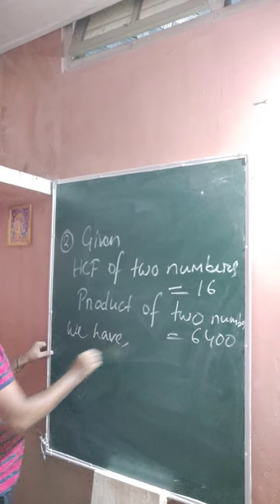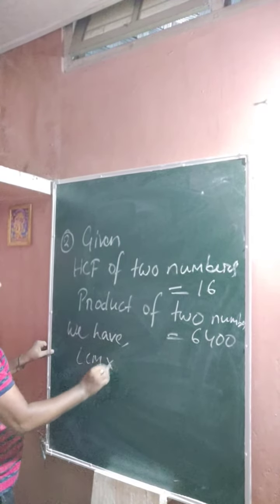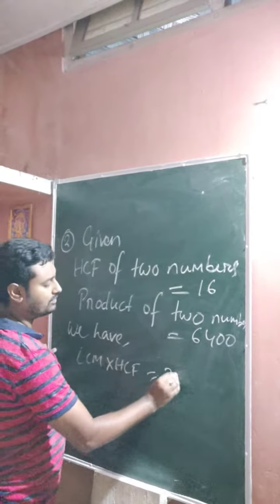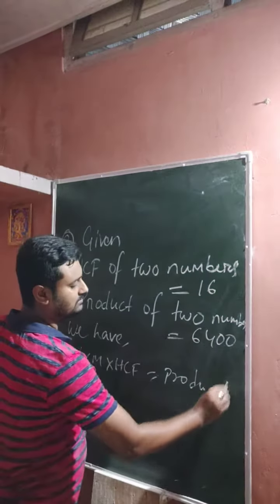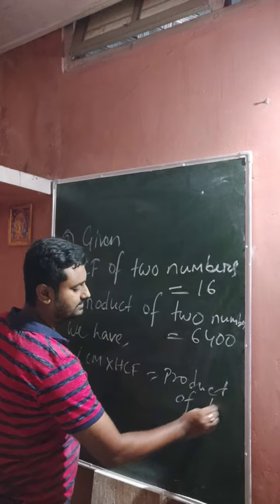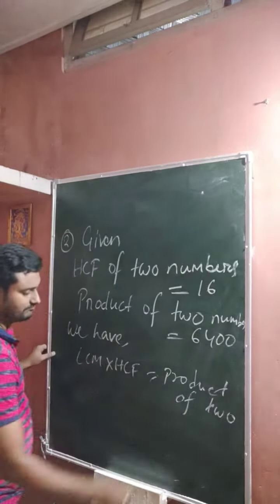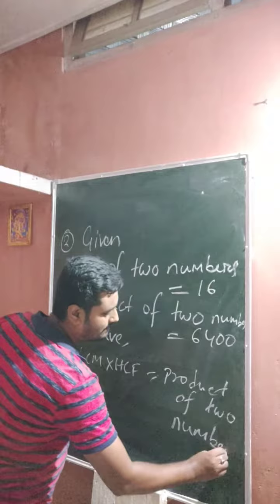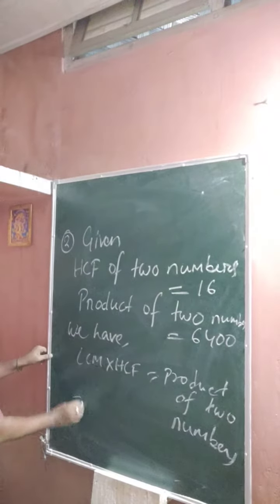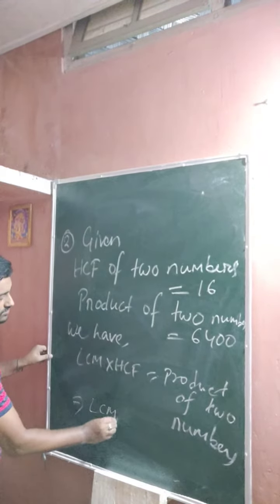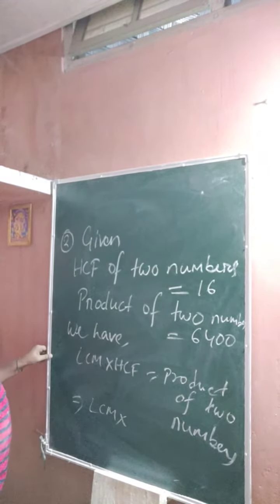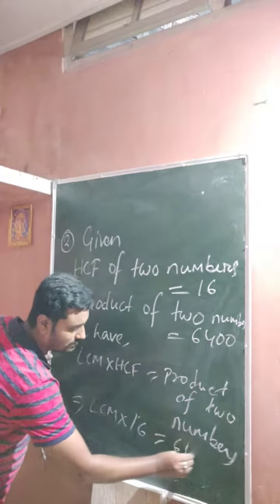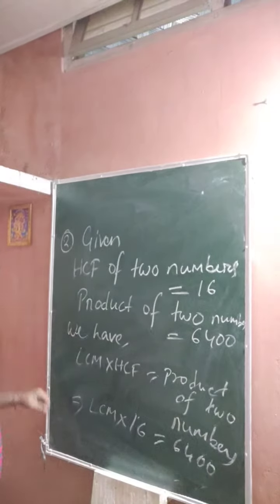We have the formula: LCM multiplied by HCF equals the product of two numbers. So that means LCM is unknown, HCF is 16, and the product is 6400.